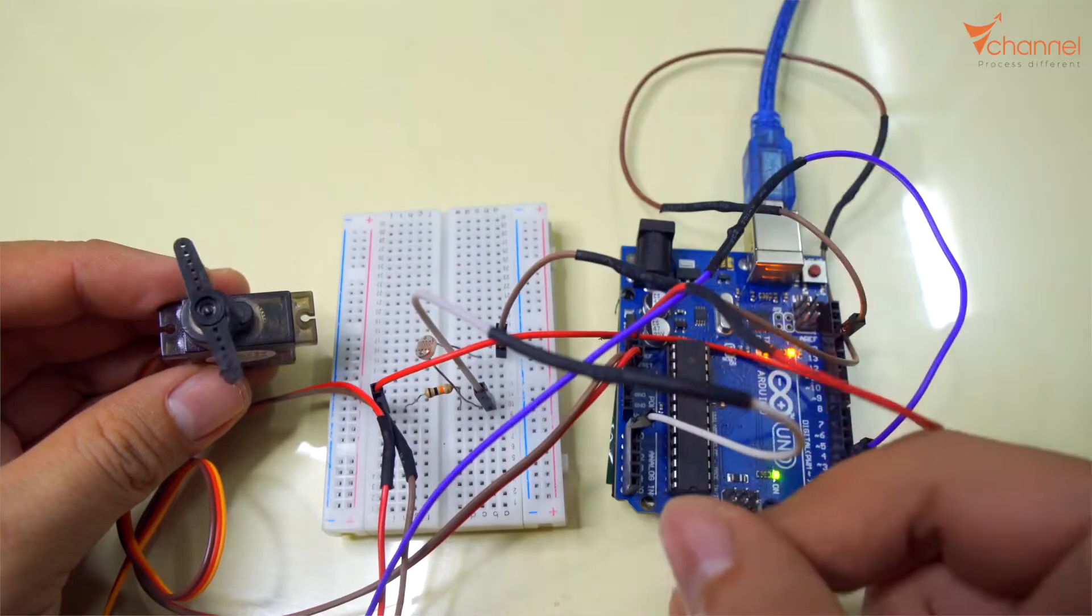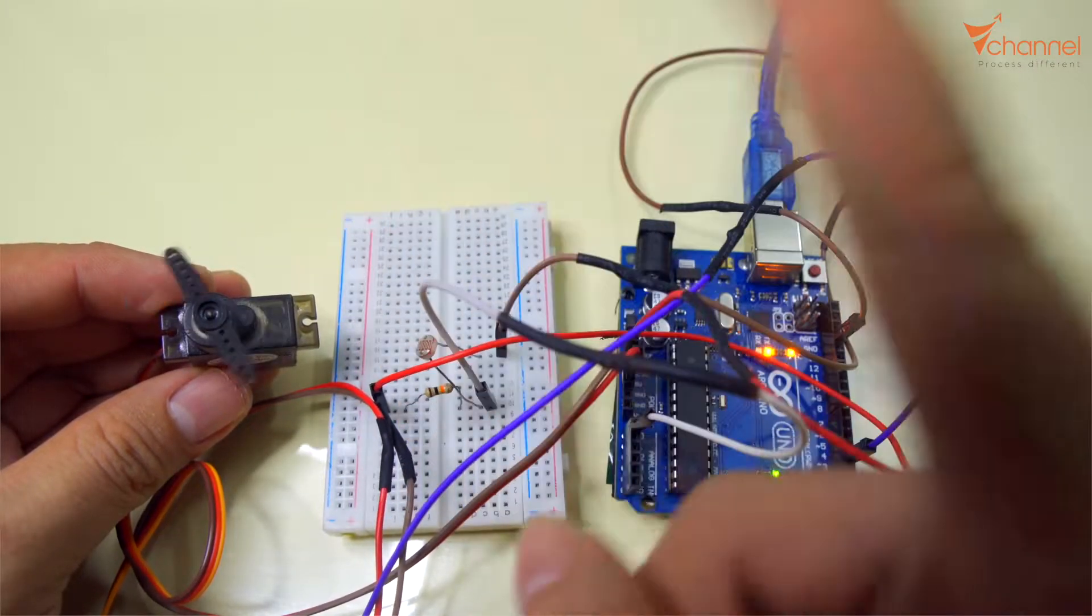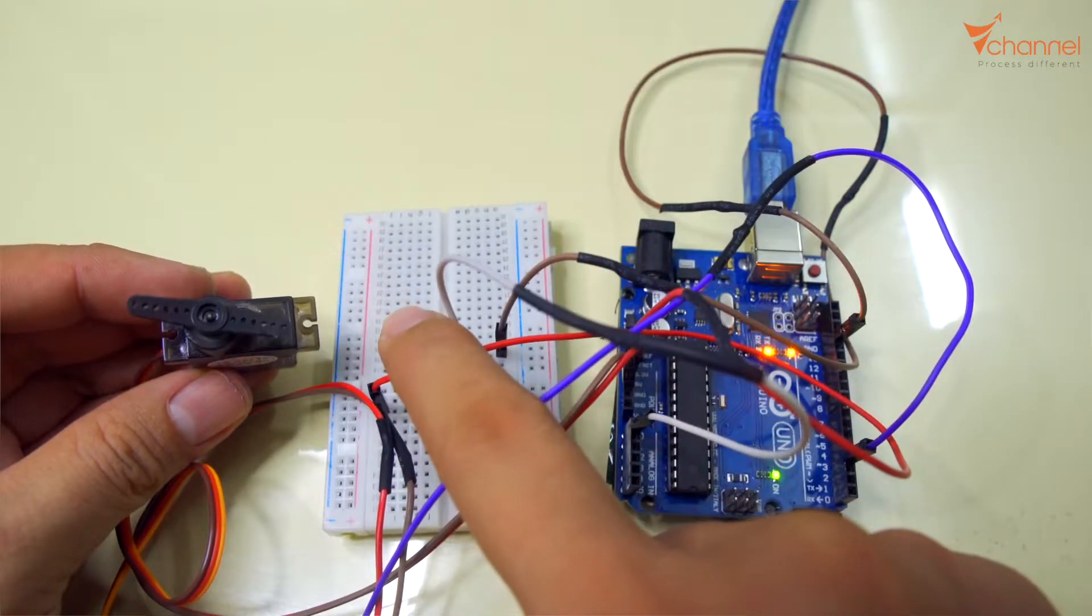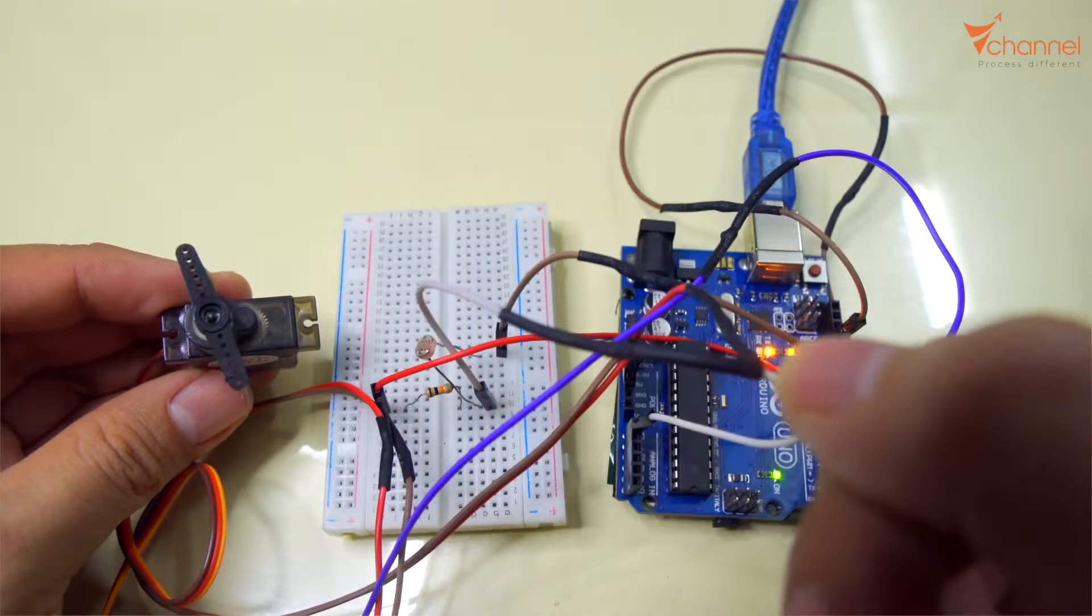There are many applications for this circuit. It's got a dark light, we can turn on or off devices automatically, control many devices, or even open doors.